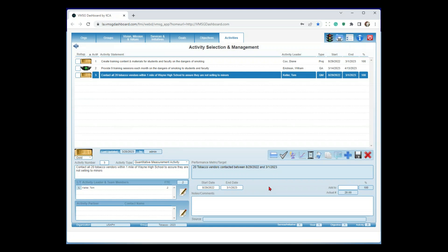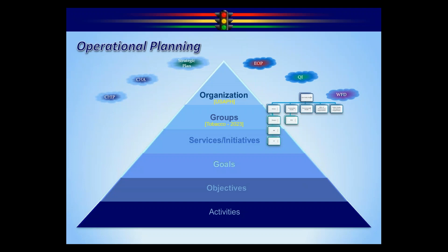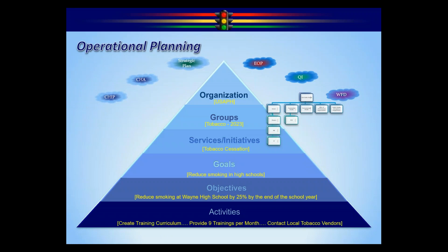If I take a look at the plan we just created in the pyramid: the group is Tobacco 2023, of the three initiatives we're working on tobacco cessation, under tobacco cessation we had three goals and we're working on reducing smoking in high schools. Then we had the SMART objective — reduce smoking at Wayne High School by 25% by the end of the school year — and then the steps to get there. That's the planning process. This planning model has been around before my 21 years in public health. You will see areas where the nomenclature is different, but this is the planning model that every plan you have will be in.